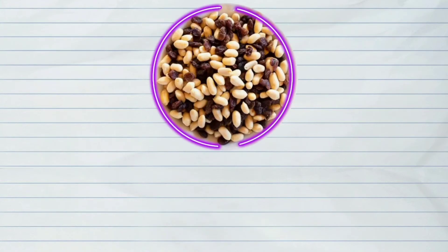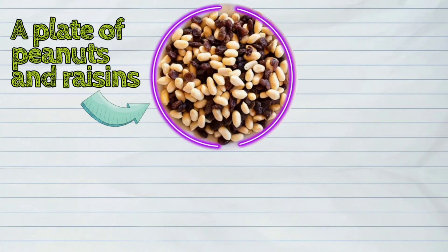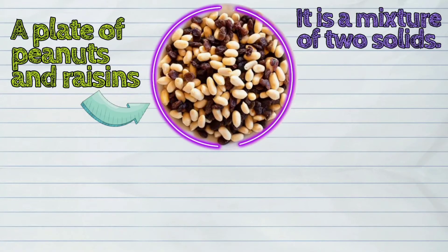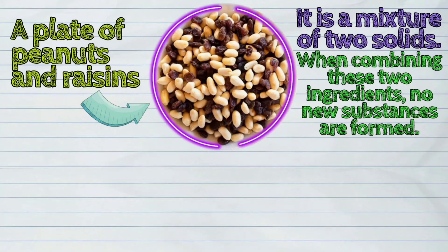Let us study these following examples. This is a plate of peanuts and raisins. It is a mixture of two solids. When combining these two ingredients, no new substances are formed.